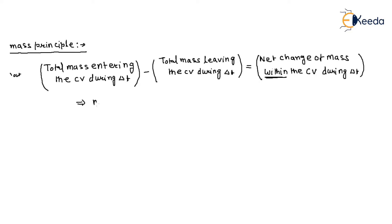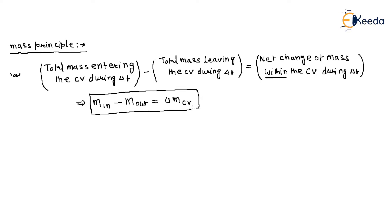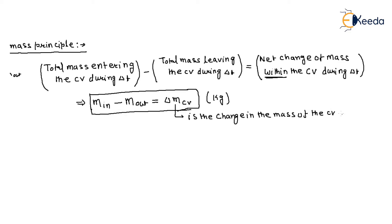The mass entering the control volume minus mass outflow from the control volume is equal to the net change of mass within the control volume. This is precisely conservation of mass. The units are in kg. MCV is the change in mass of the control volume during the process.